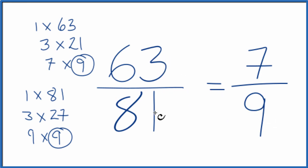If you divide 63 by 81 or 7 by 9, you get the same decimal answer. They're equivalent fractions. It's just that we've simplified 63 81sts down to 7 9ths, and we can't reduce this any further.